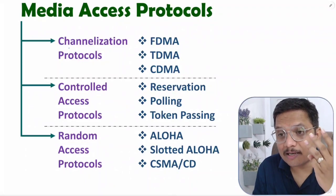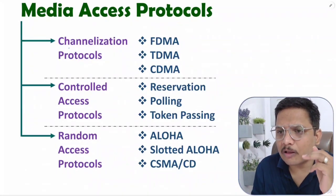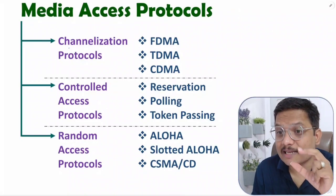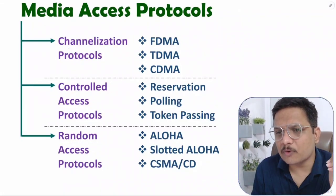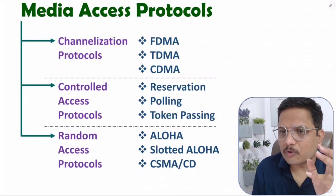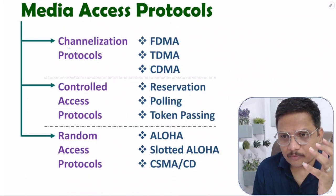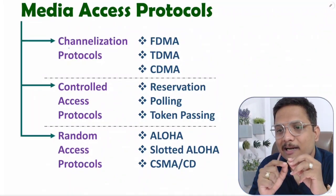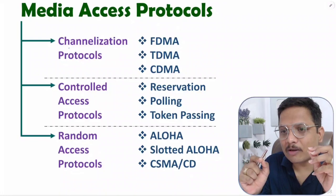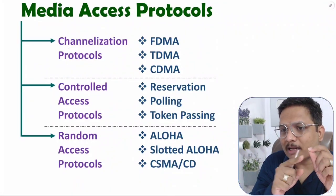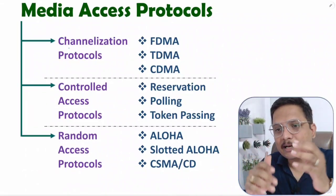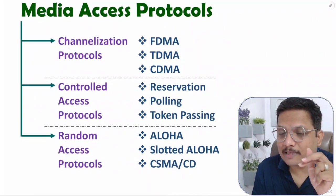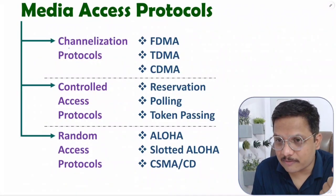The third is CDMA, code division multiplexing. Here all users can transmit and receive data at any frequency at any time, but channelization is done in terms of codes. Every user has a well-defined orthogonal code. To retrieve data, you need the user's code — once the receiver knows the transmitter's code, it can extract the data no matter how many users are sending on the channel. So in CDMA channelization is by code, in TDMA by time, and in FDMA by frequency.